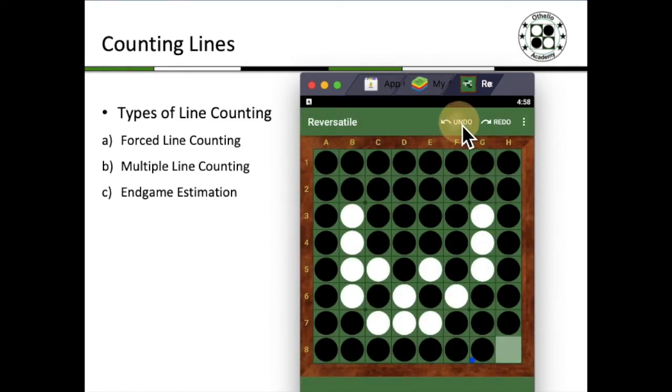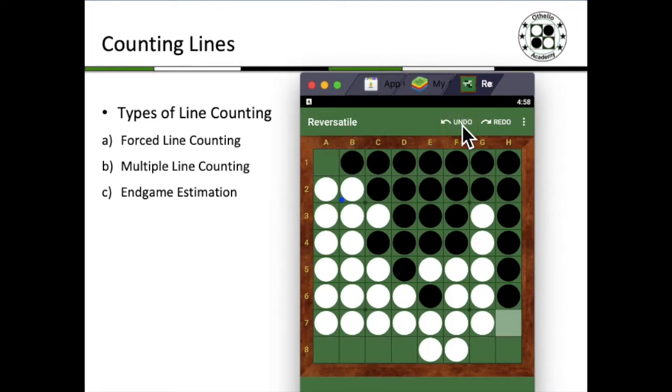So if we just go back to that position earlier, you then understand that this is a forced line counting, where basically the line is forced, and even though it is 6 or 7 moves ahead, you can count out the line and estimate the result.